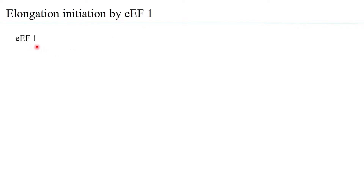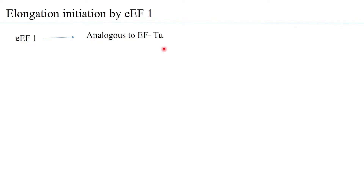In the eukaryotic system, elongation factor EEF1 is basically analogous to EF2 in the prokaryotic system. The role of EEF1 is similar to the role of the elongation factor Tu.